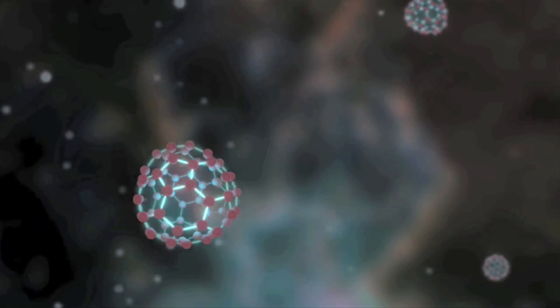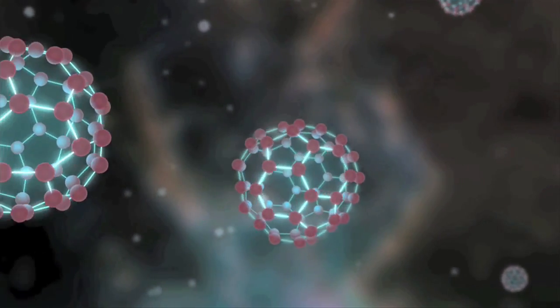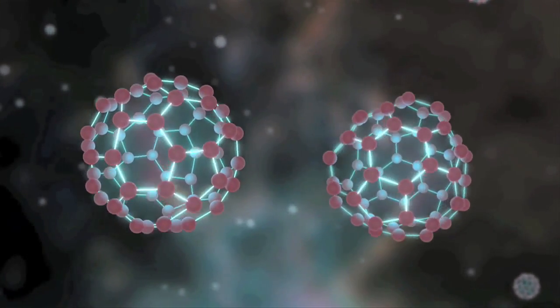We can detect Buckyballs in space through their vibrational motions. These Buckyballs oscillate or vibrate in very different ways and each way they vibrate corresponds to a very specific color of infrared light that they emit or absorb.